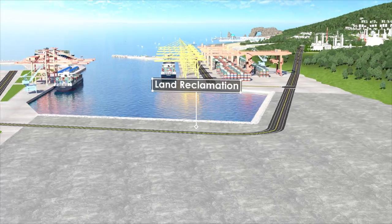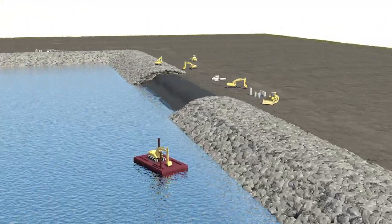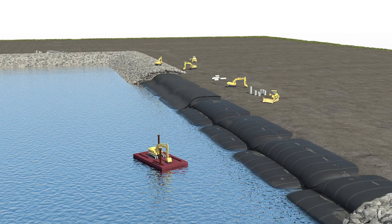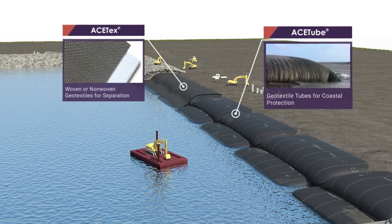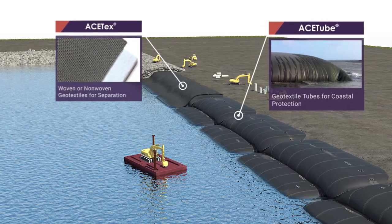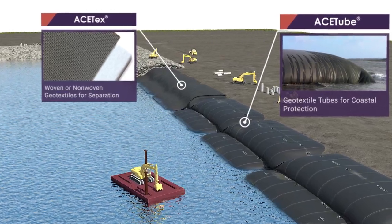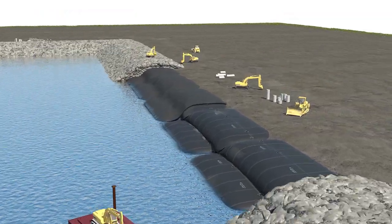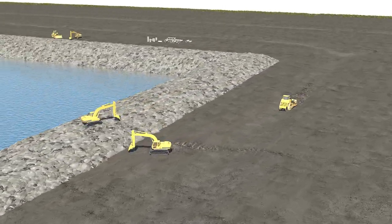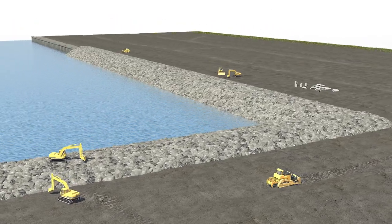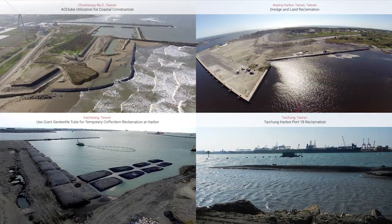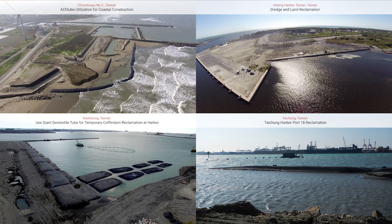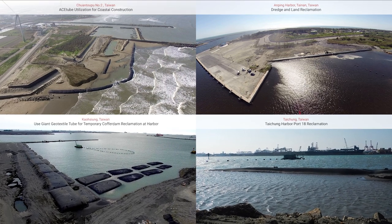Land Reclamation: Utilizing ACE tube geotextile tubes to build coffer dams along the coast as sand trapping barriers is a cost-effective way to create new lands from oceans or riverbeds. The geotextile tubes are easy for underwater construction. With geotextile tubes, it can prevent the reclaimed tidal land from threats of wave erosion and enhance the stability of the backfilled area.